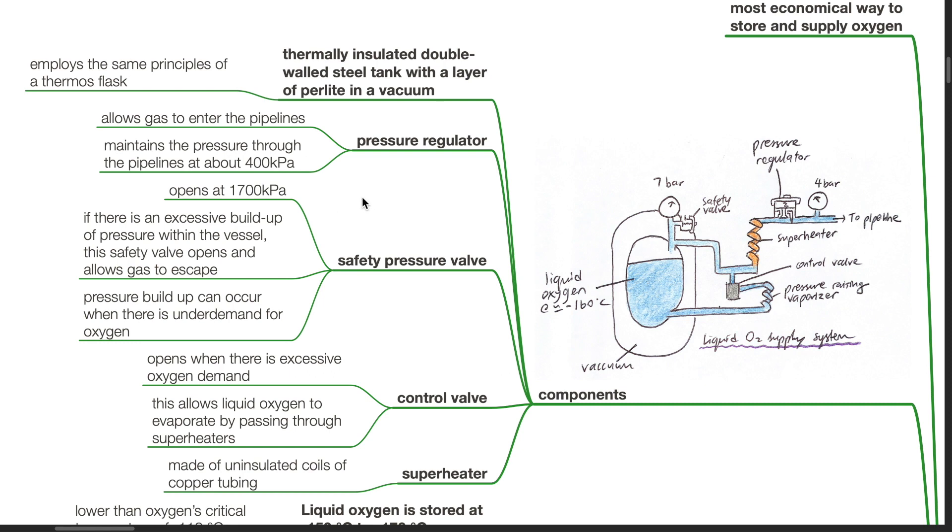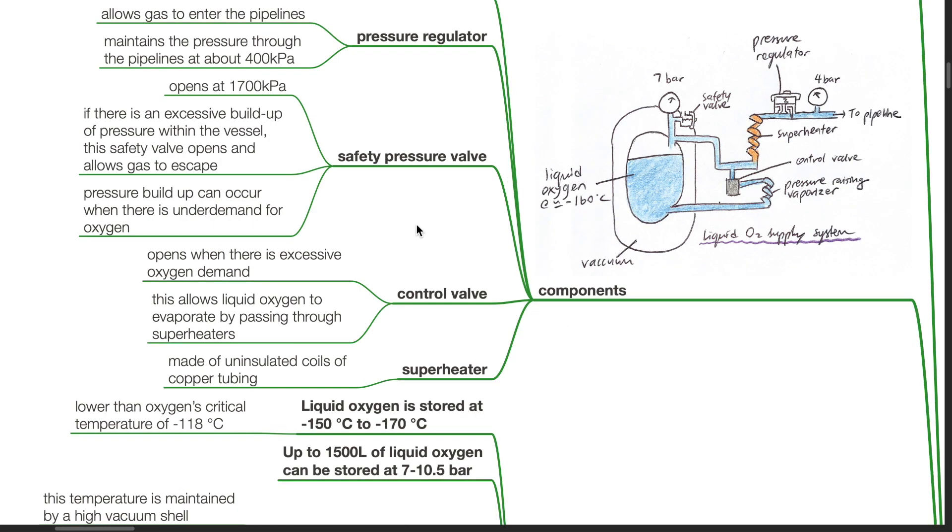If there is an excessive build up of pressure within the vessel, this safety valve opens and allows gas to escape. Pressure build up can occur when there is under demand for oxygen. Control valve opens when there is excessive oxygen demand and allows liquid oxygen to evaporate by passing through super heaters. The super heater is made of uninsulated coils of copper tubing.